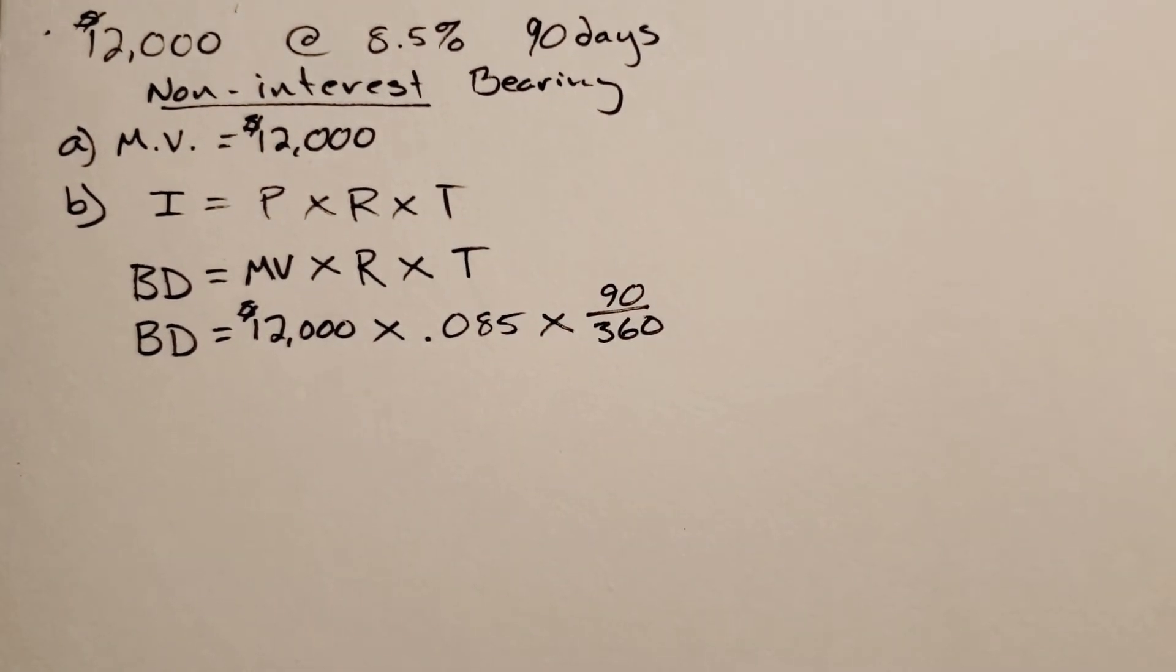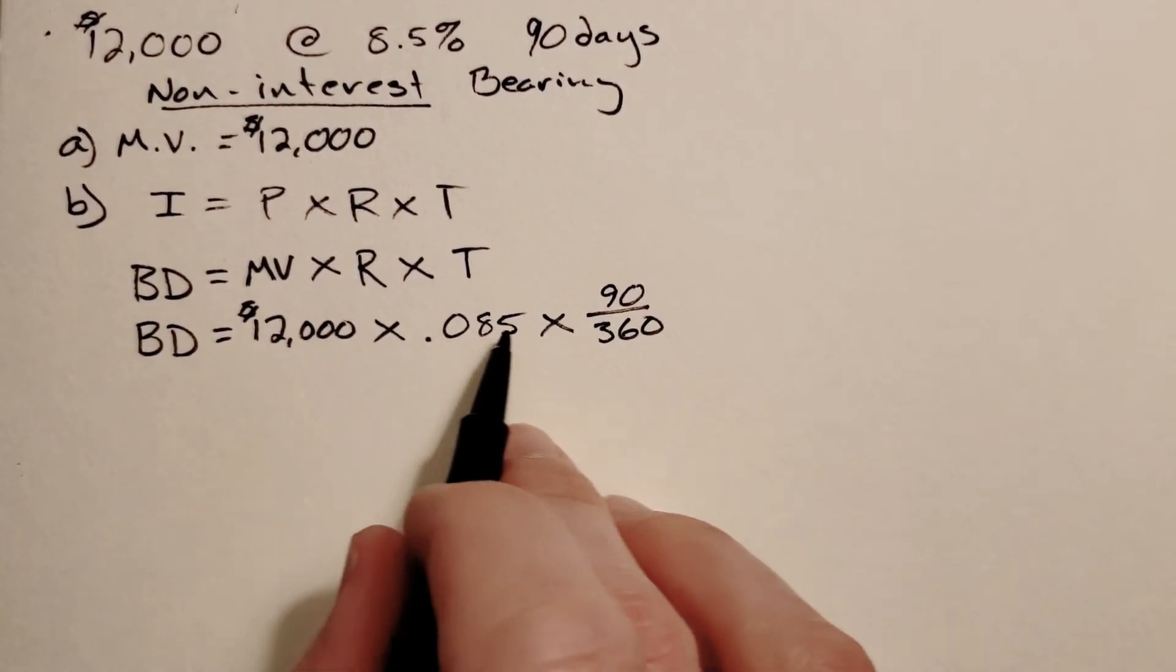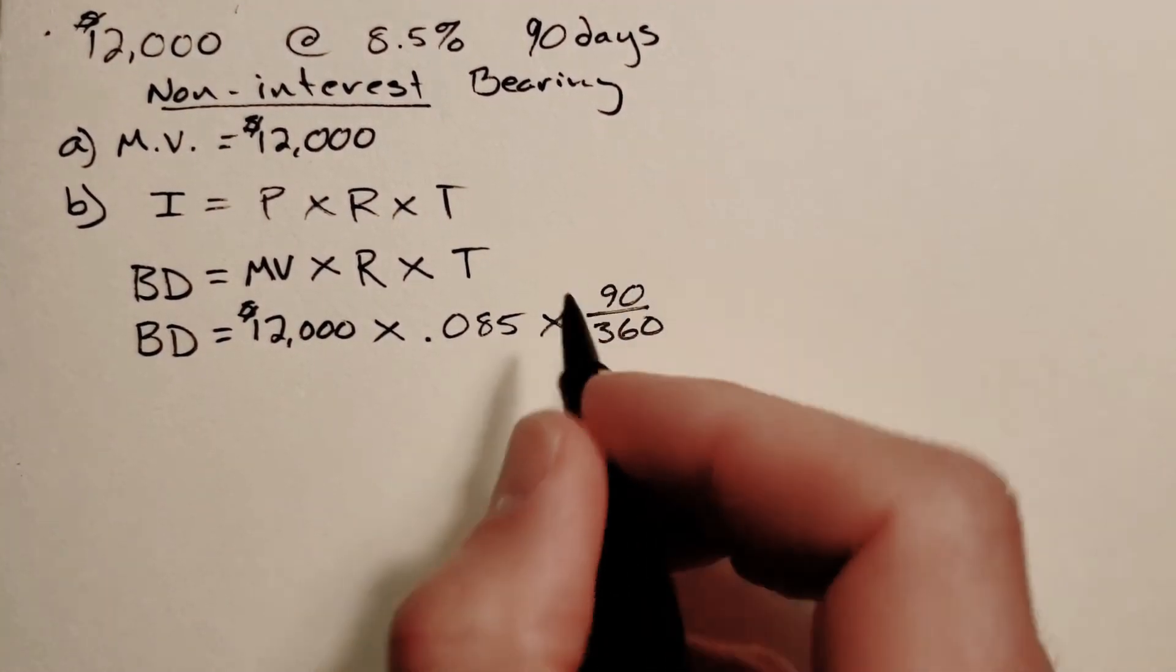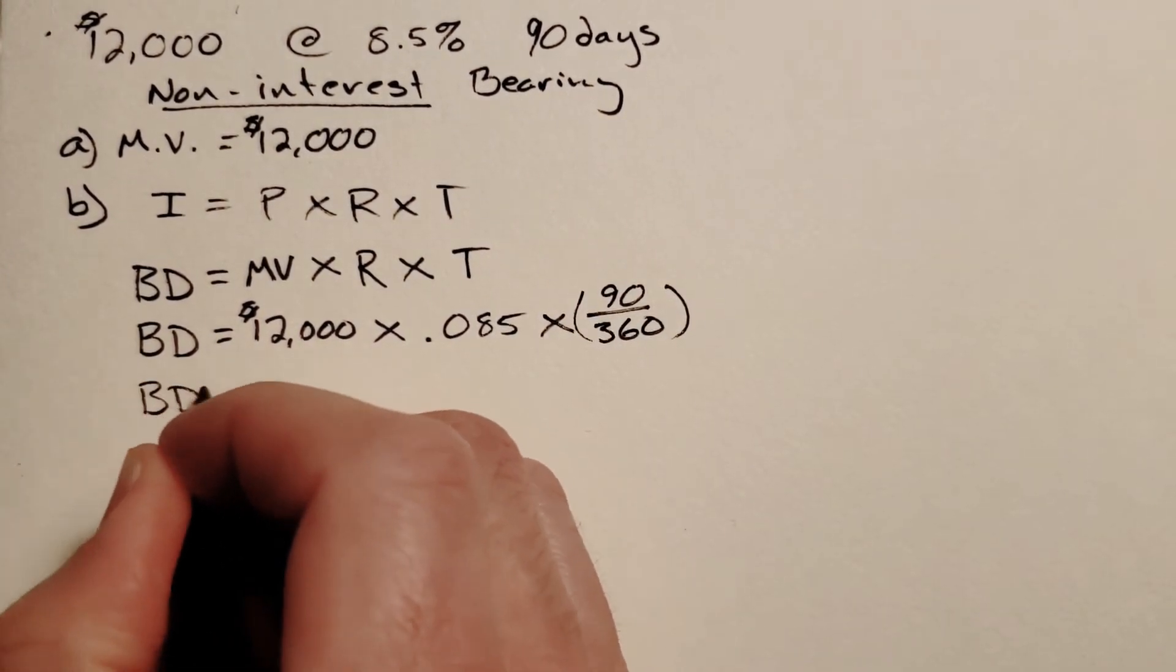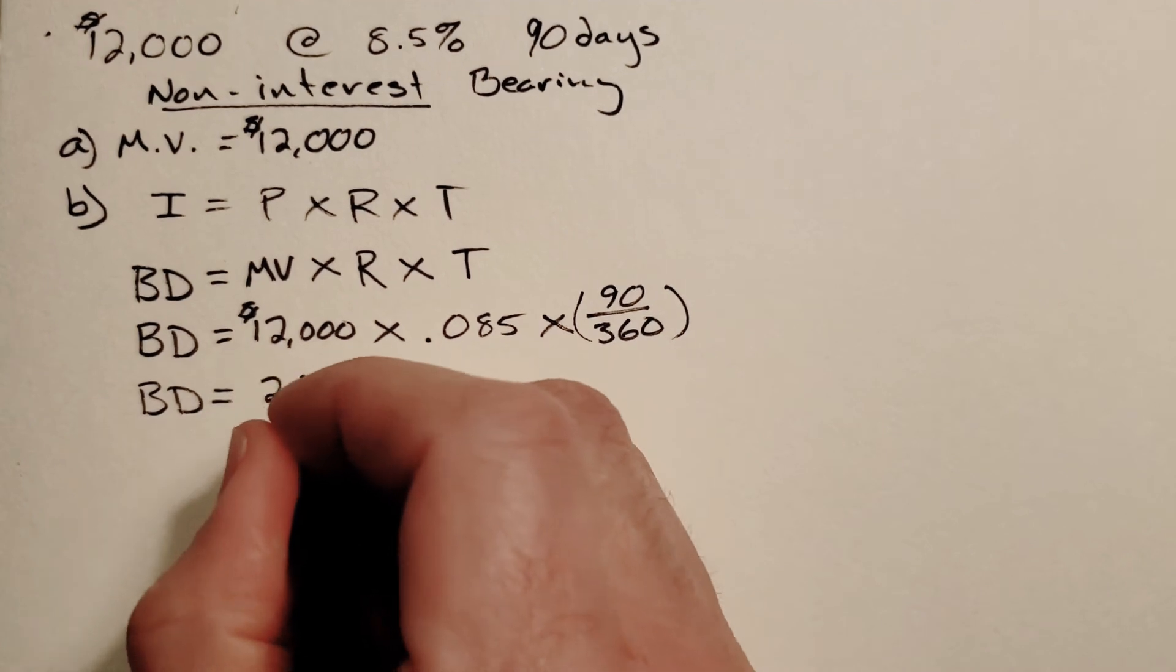We should always assume 360 unless it says exact interest. When we multiply all this out and do our division, your bank discount comes out to be $255.